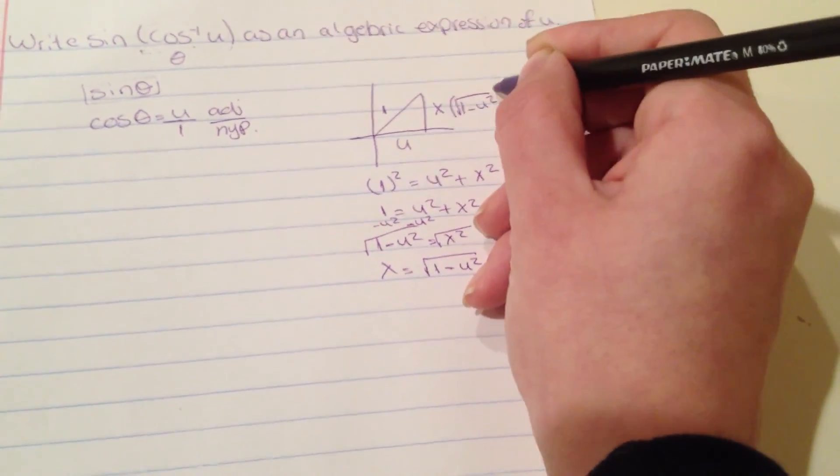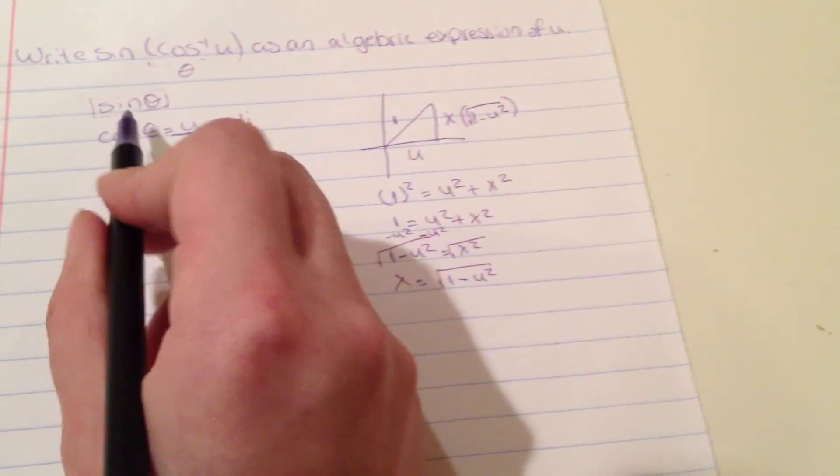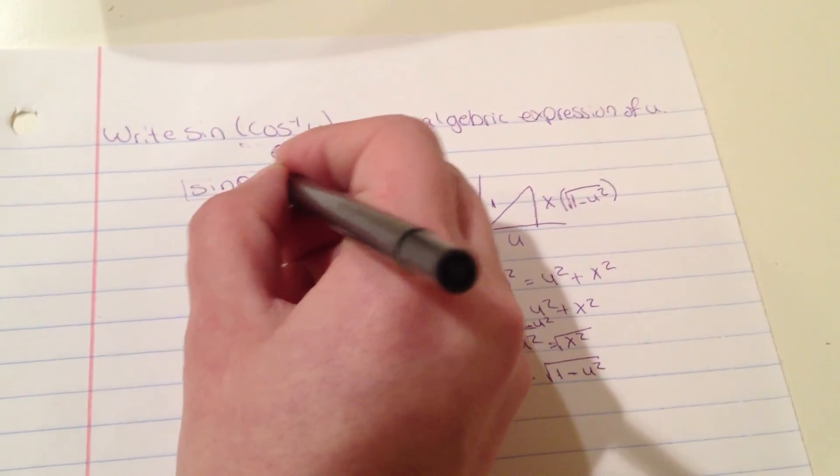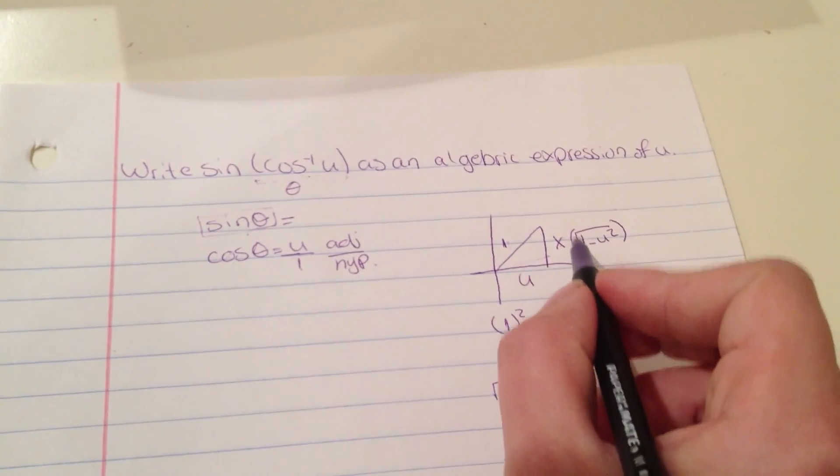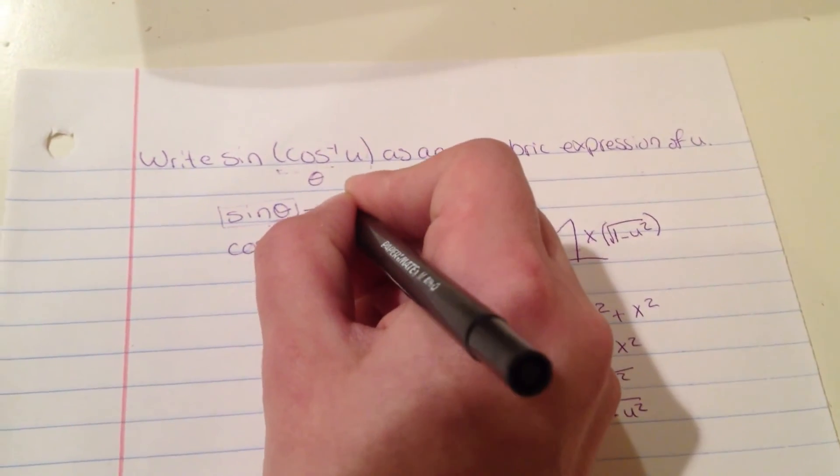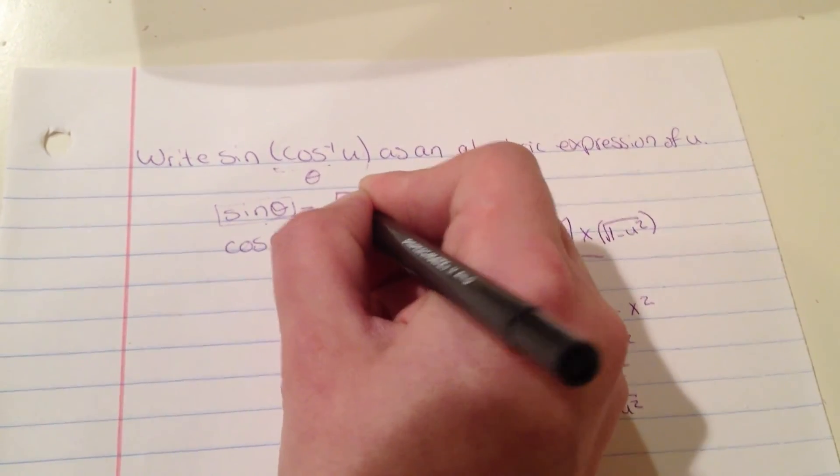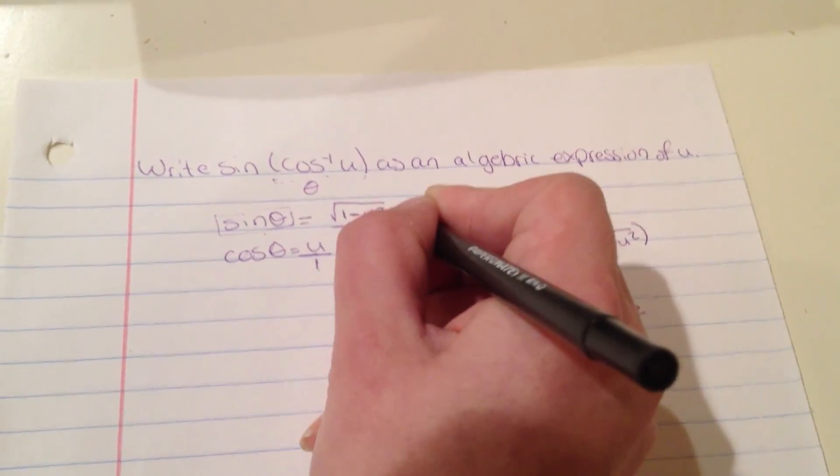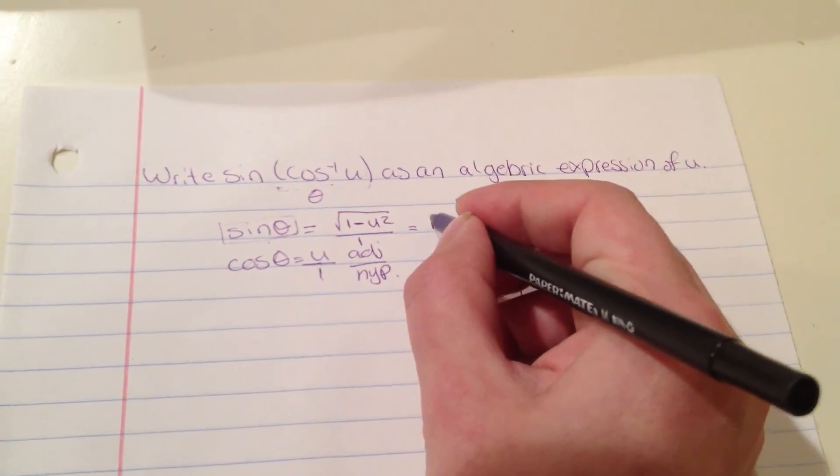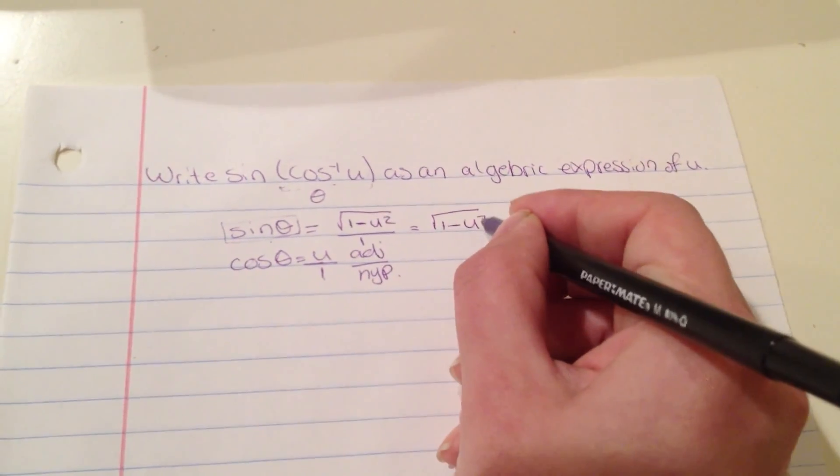The sine equals opposite over hypotenuse, so it's square root of 1 minus u squared over 1, which is the same as square root of 1 minus u squared.